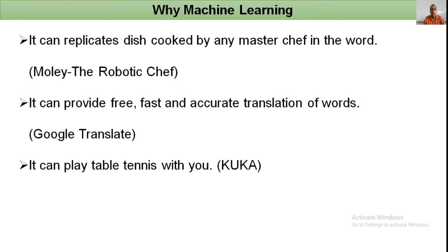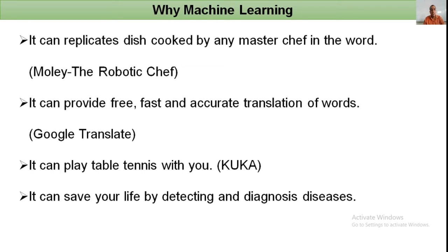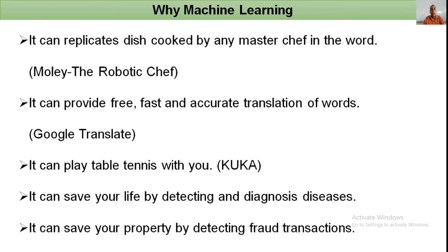Machine learning can even play table tennis with you. Kuka is a robot that can play table tennis. Very importantly, machine learning can save your life by detecting and diagnosing diseases. Many eye diseases and cancer diseases can be detected and diagnosed using machine learning techniques.